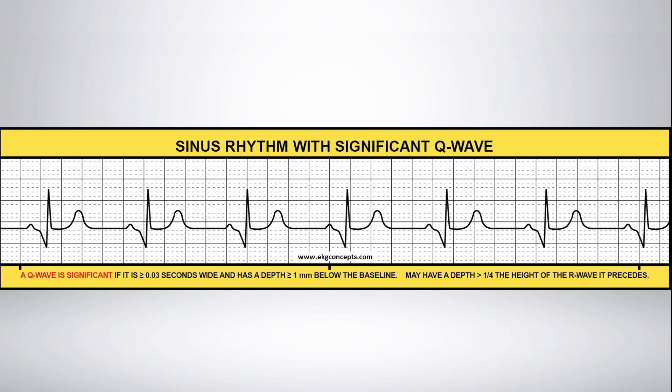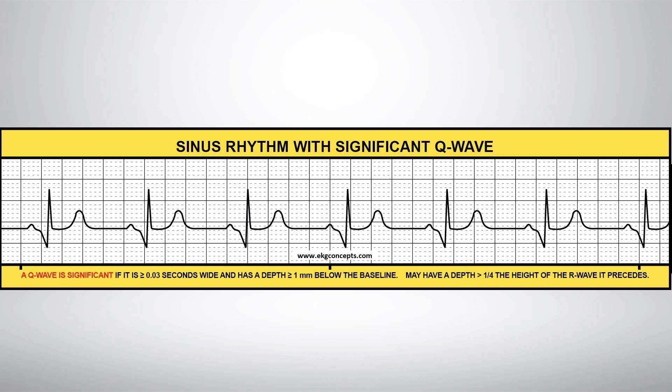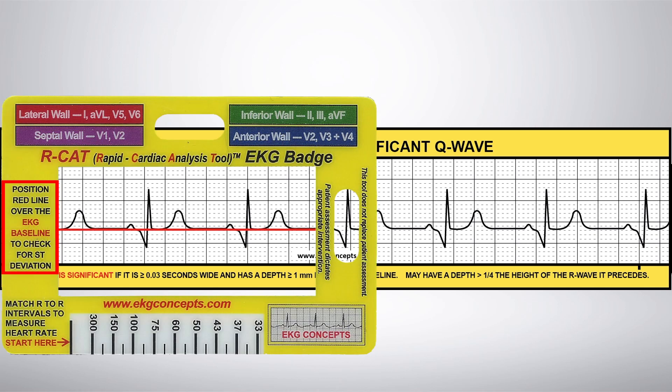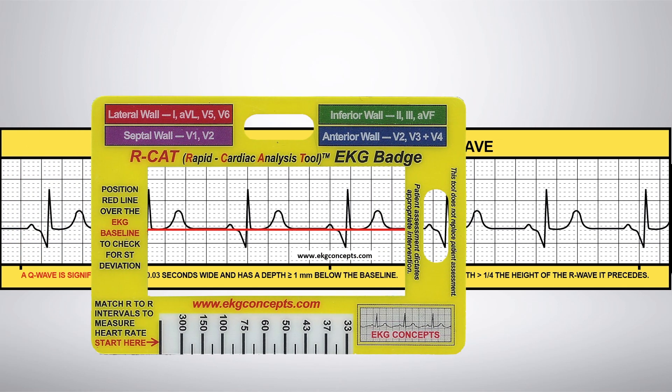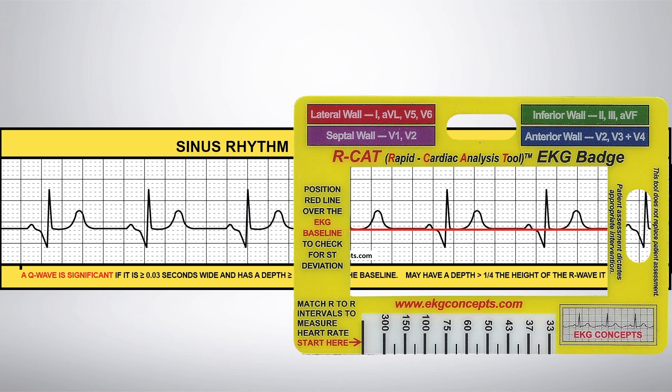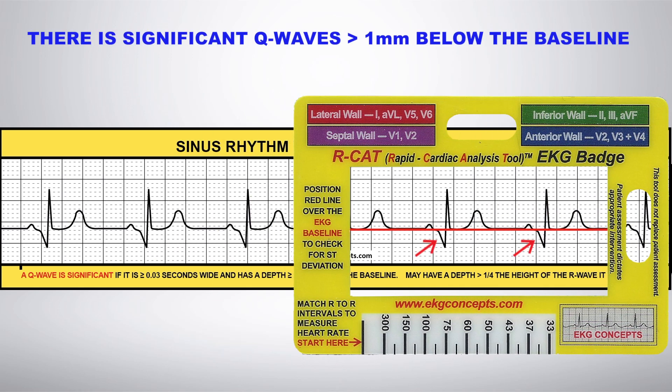Using the EKG badge, align the red line on the baseline and slide the badge along the rhythm strip looking for ST deviation. This rhythm shows that the Q waves are greater than 1 mm below the baseline.